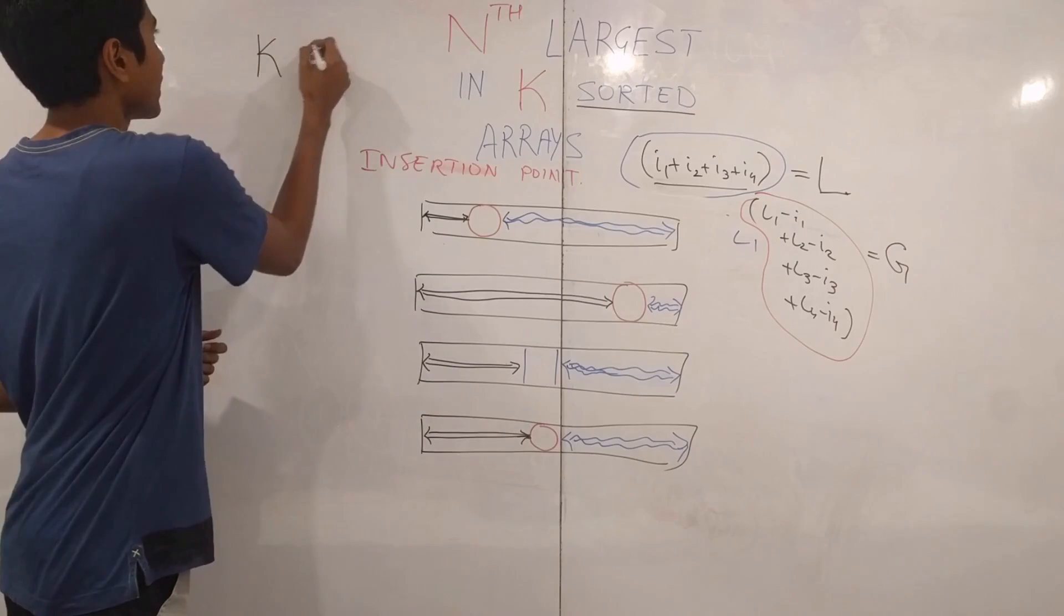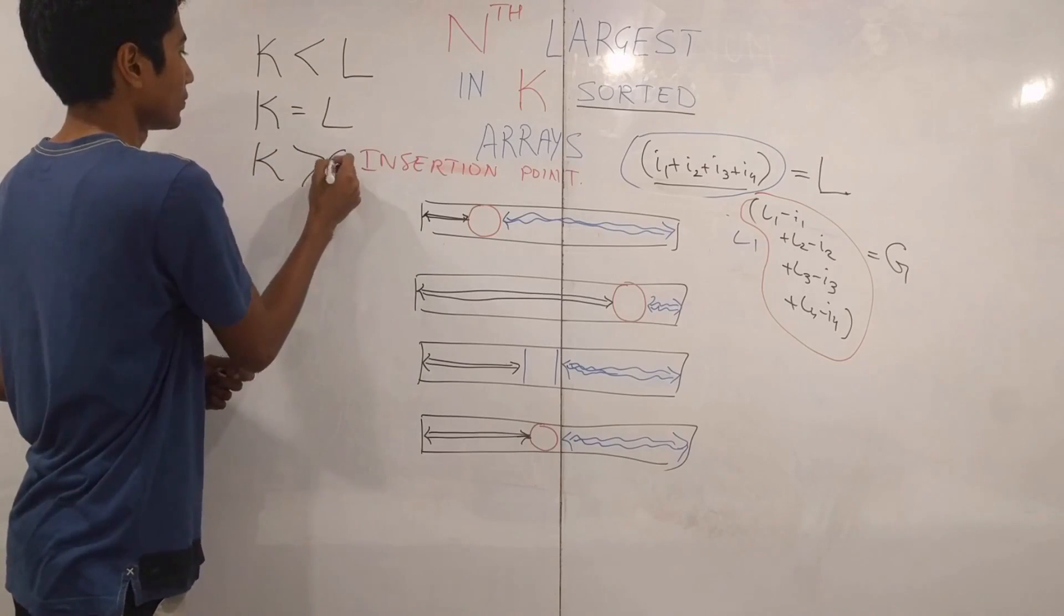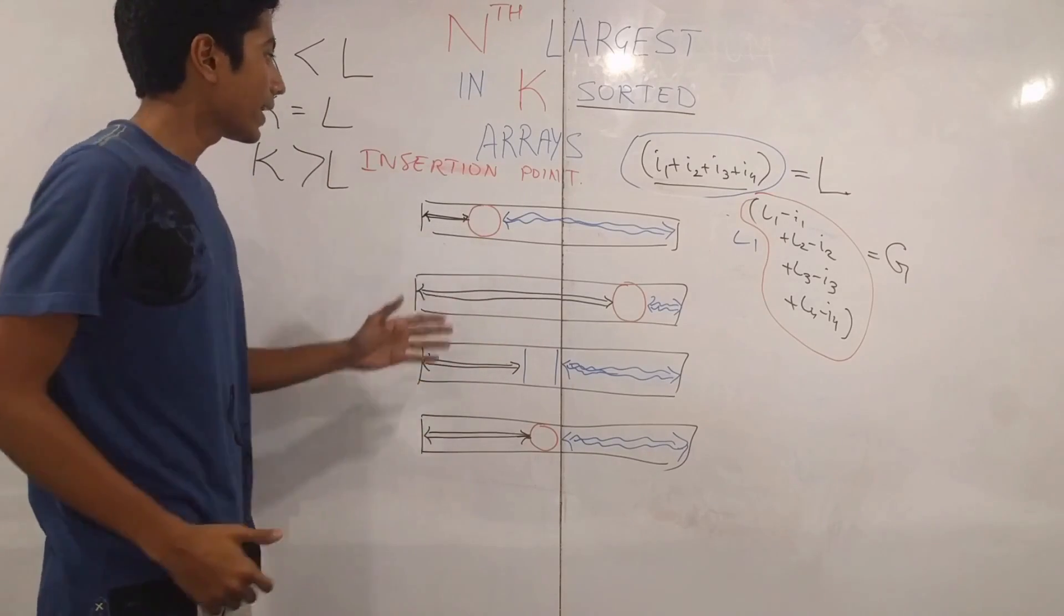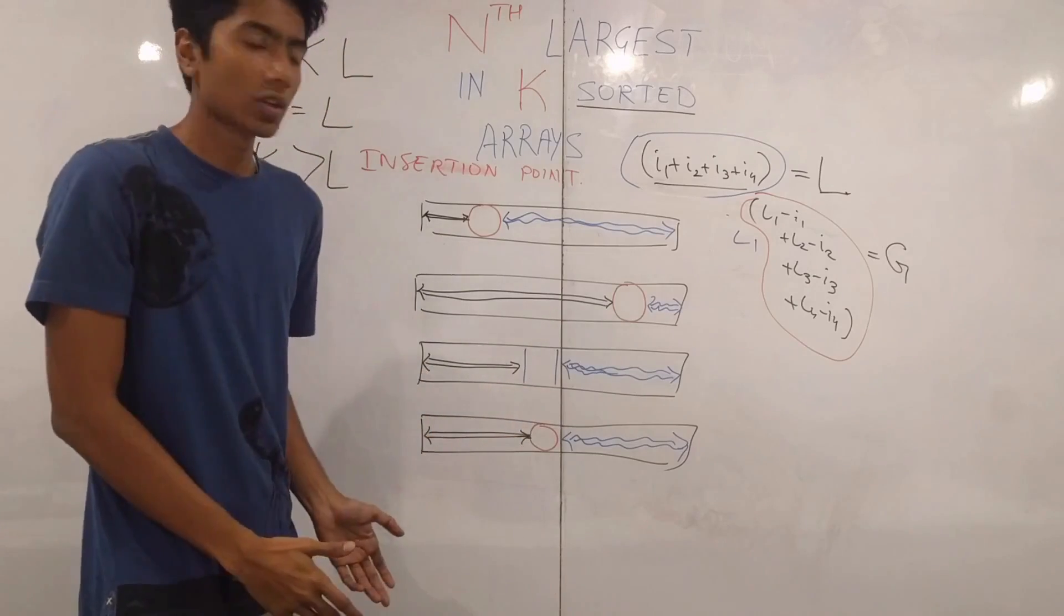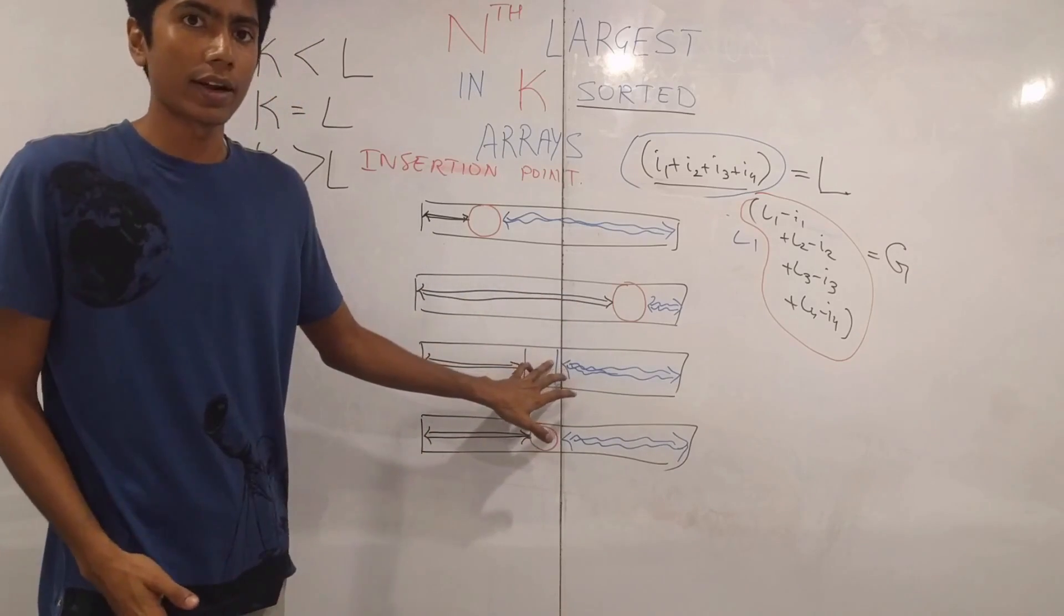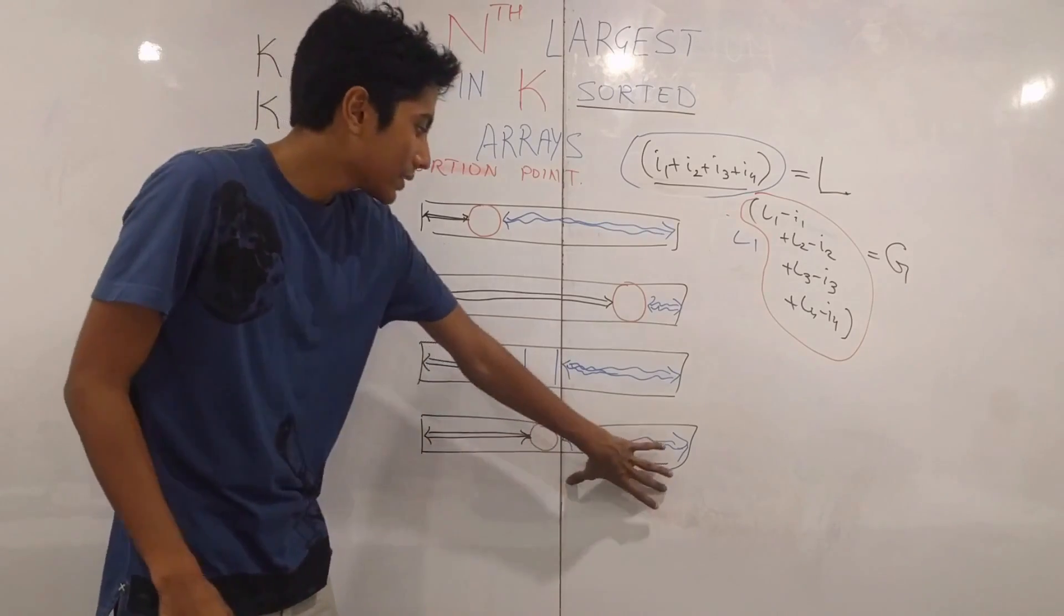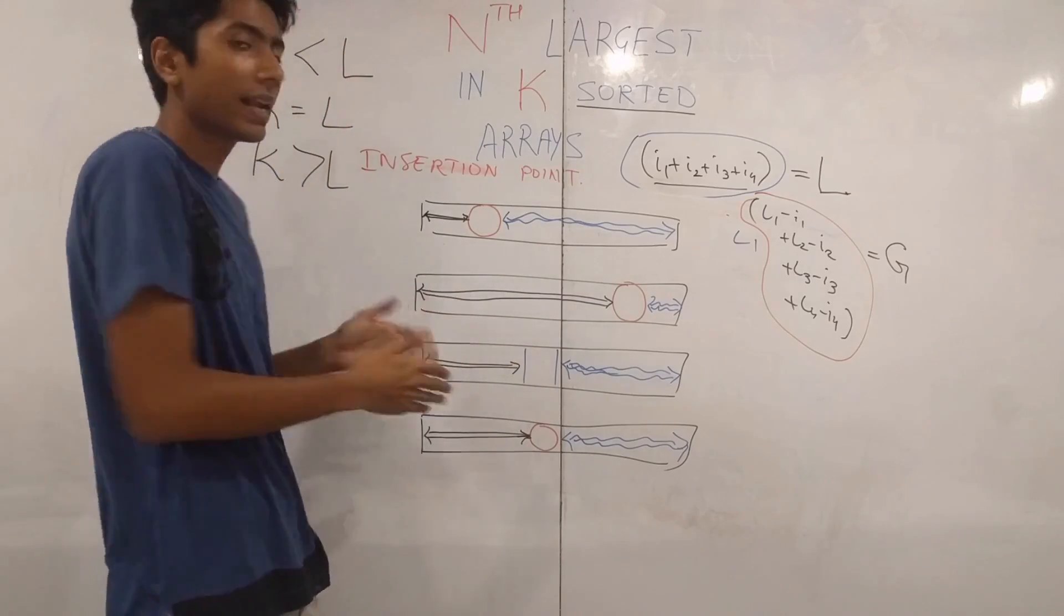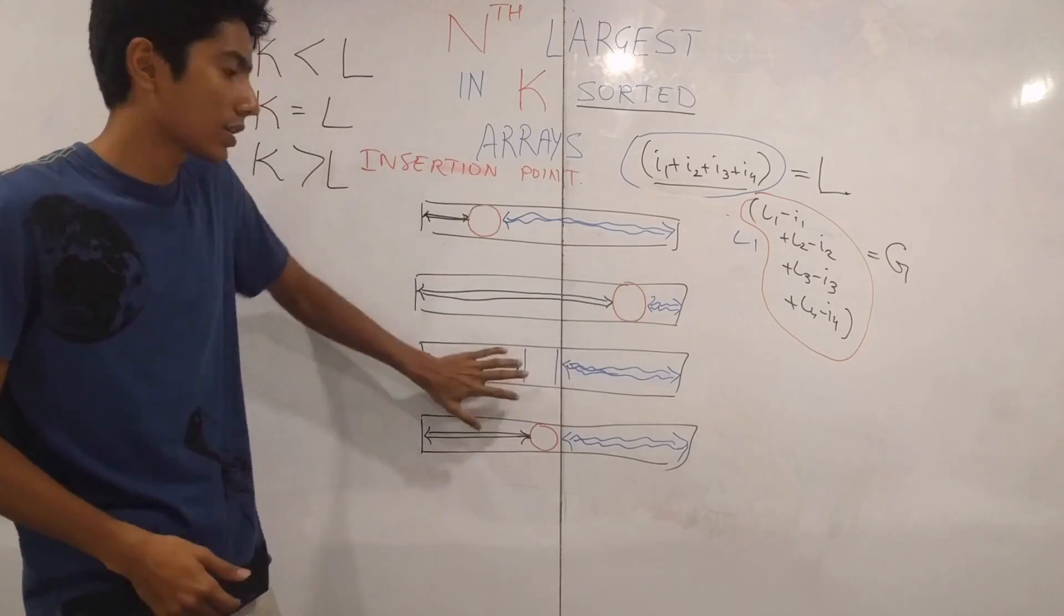If k is less than l, then we can say that the element that we are looking for lies within these ranges, the ones marked by the black arrows. Because those are the ranges of all elements which are less than the element that we are looking at right now. Similarly, if k is greater than l, then the element lies in the ranges marked by the blue arrows. Because the element that we are looking for is of an index greater than l, which are all these elements combined, the black ones combined.